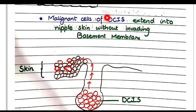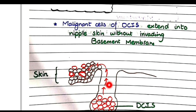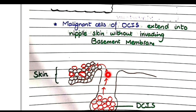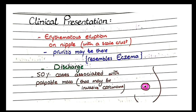The important point is that malignant cells of ductal carcinoma in situ extend into the nipple skin without invading the basement membrane. You can see that the malignant cells shown in this diagram do not cross the basement membrane; rather they extend through the lumens of the ducts into the skin of the nipple.